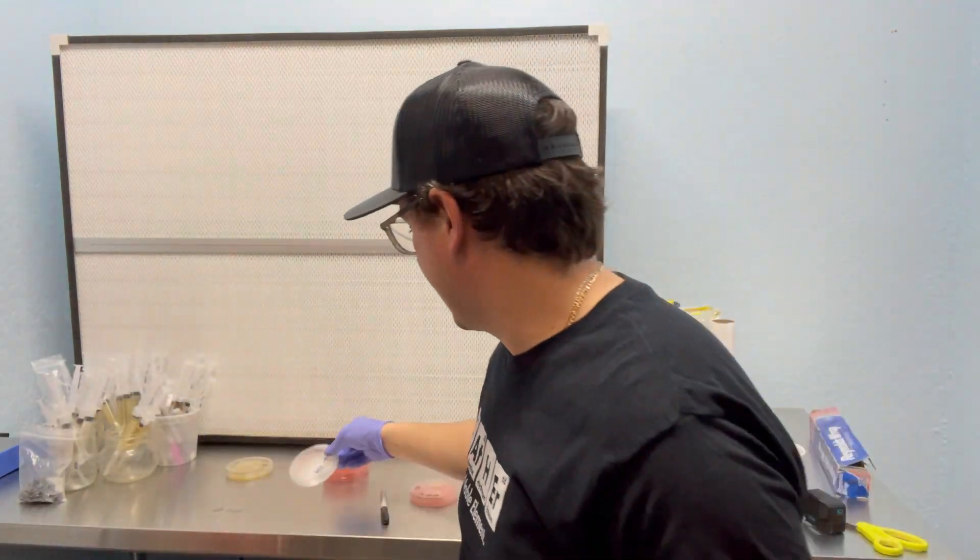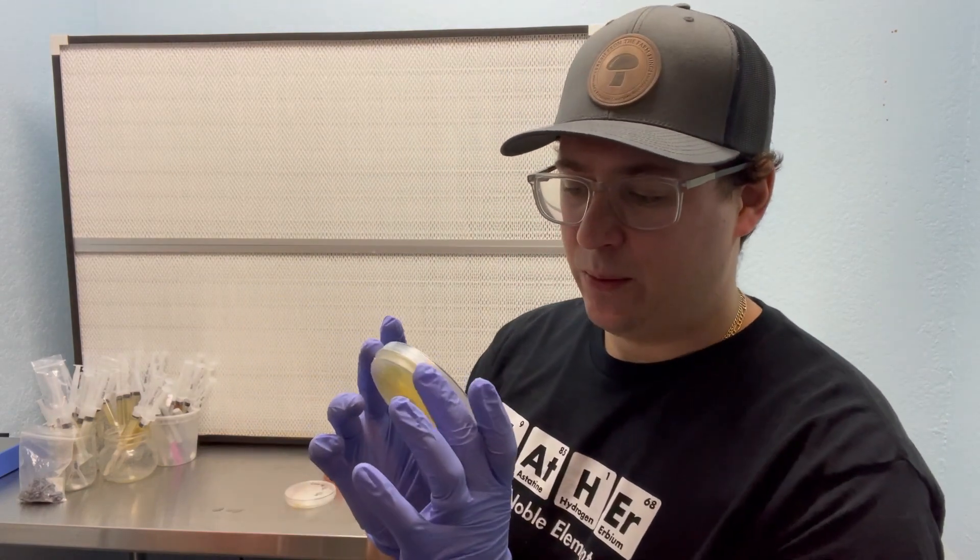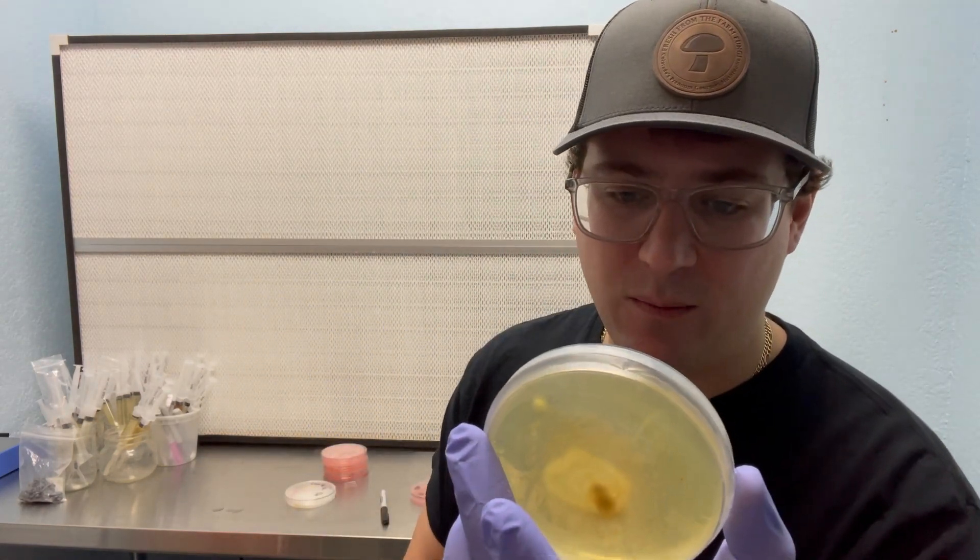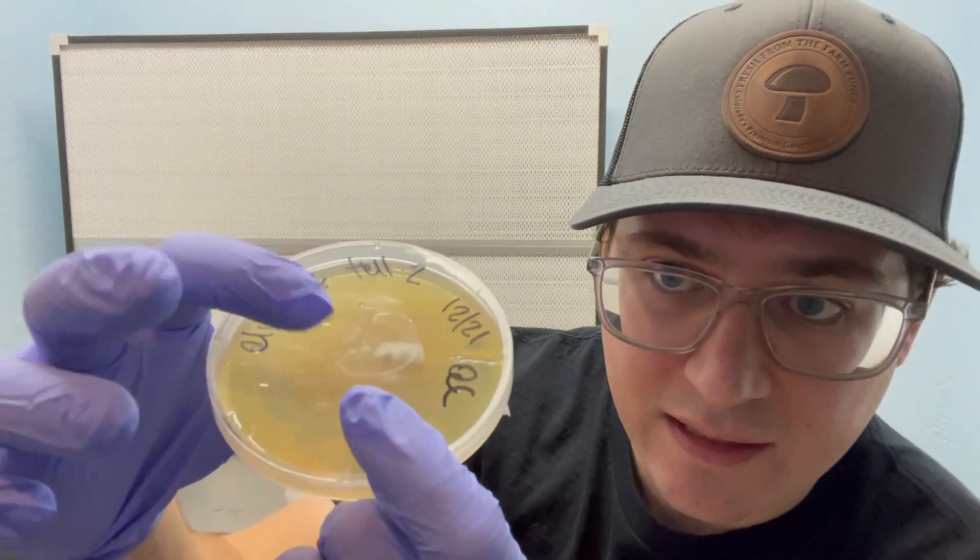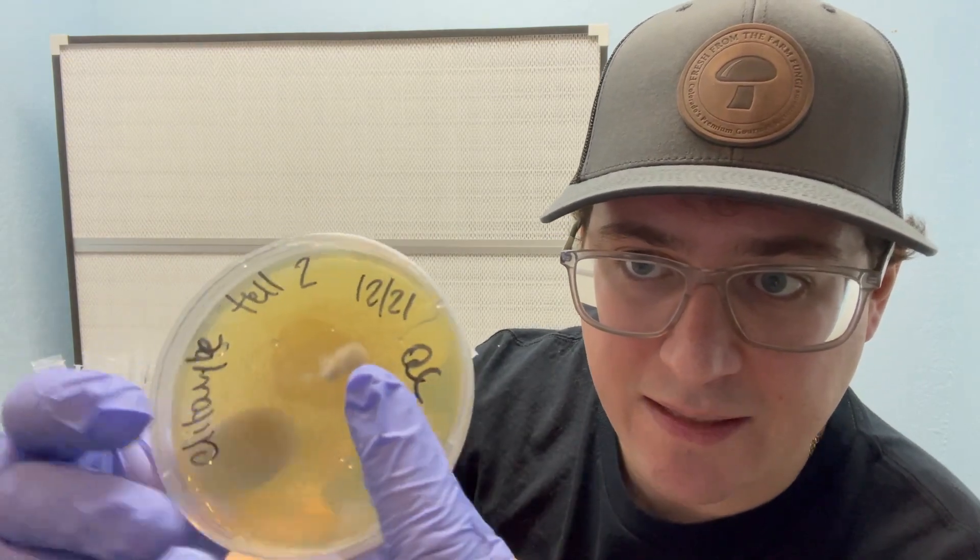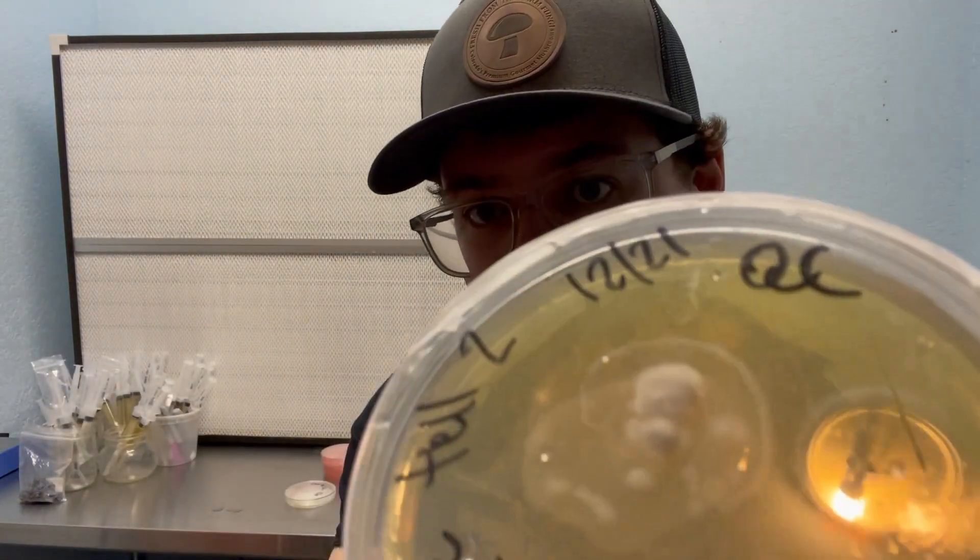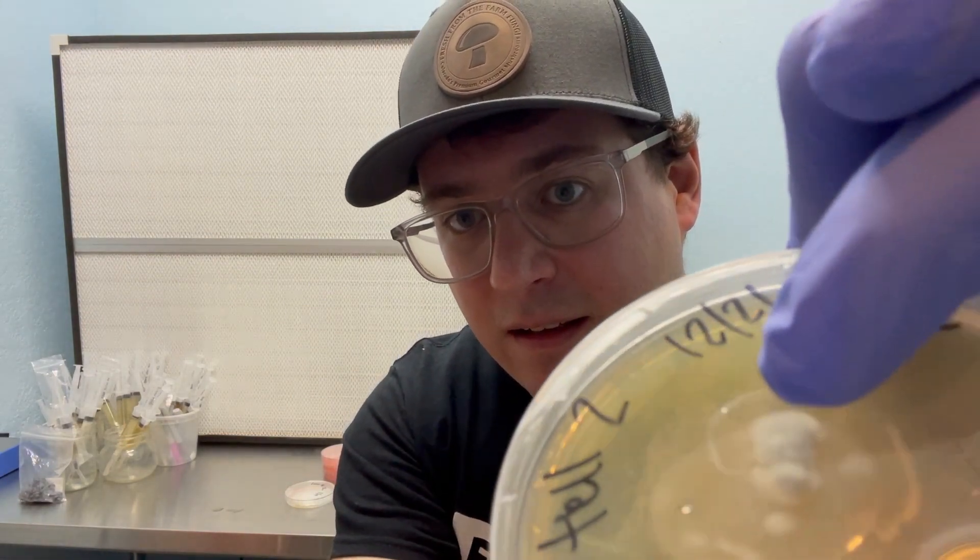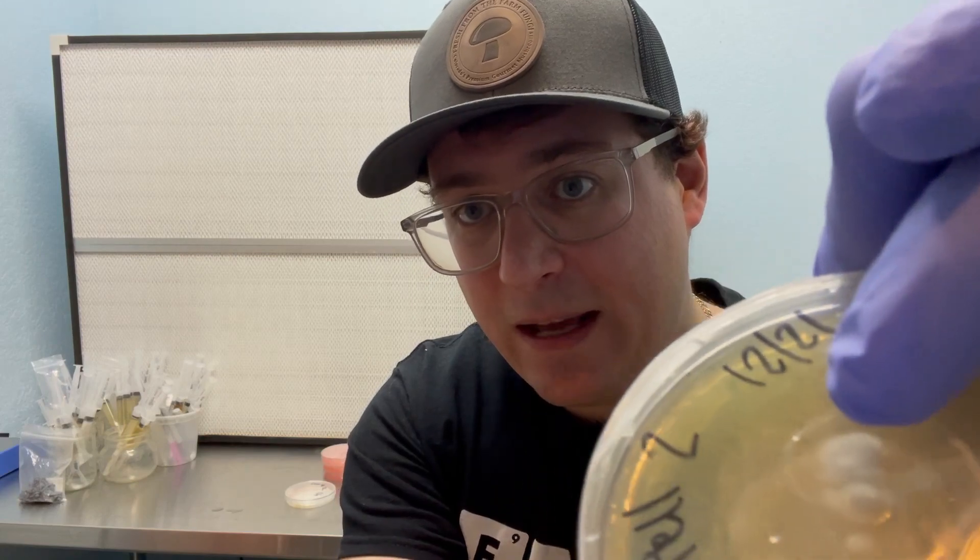But interesting enough, I can still salvage some of that mycelium on the far side. Here's another example of this clitocybe that I've been working on for a few months. It looks like there's this blob of bacterial growth surrounding the mycelium. But there is a clean portion of that mycelium right on the edge there. So I can take from that clean mycelium and transfer it onto a new petri dish to save that culture.